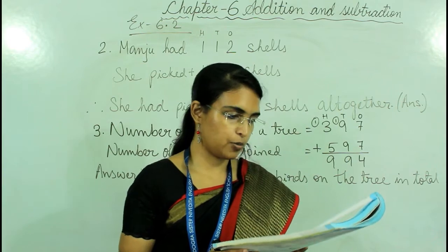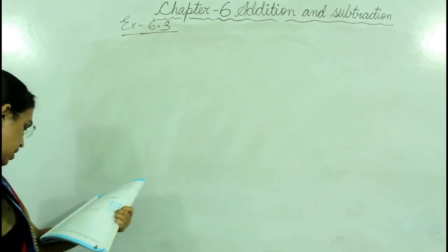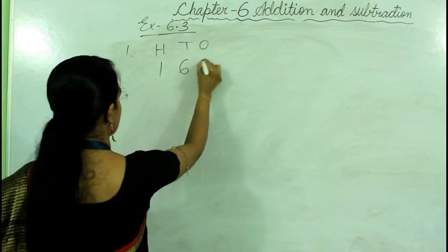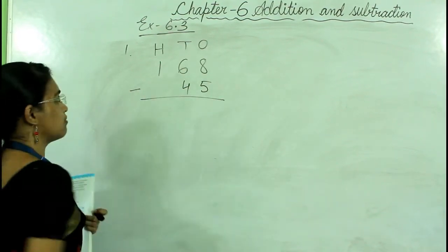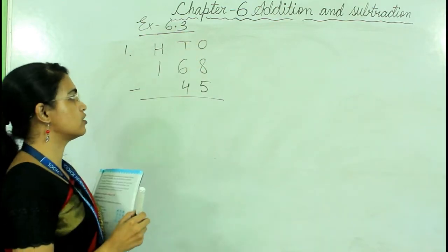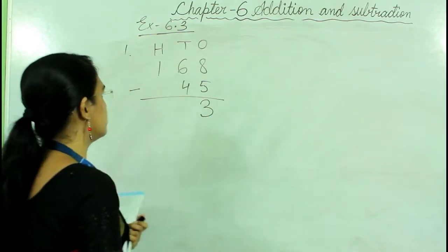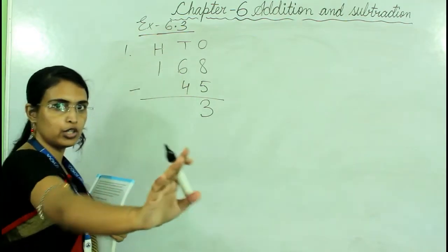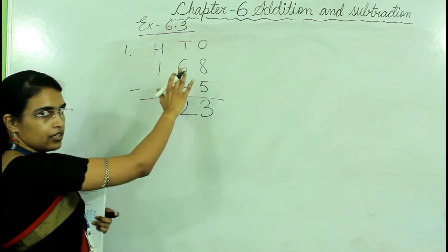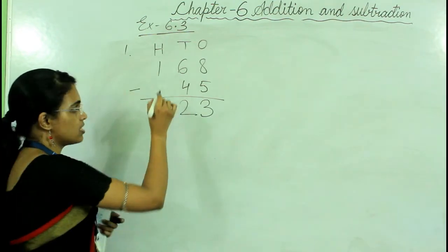Exercise 6.3: subtract the following. Question 1 is 168 minus 45. First subtract the ones place: 8 minus 5 is 3. Then tens place: 6 minus 4 is 2. There is no carry and no number above in the hundreds, so we write 1. The answer is 123.